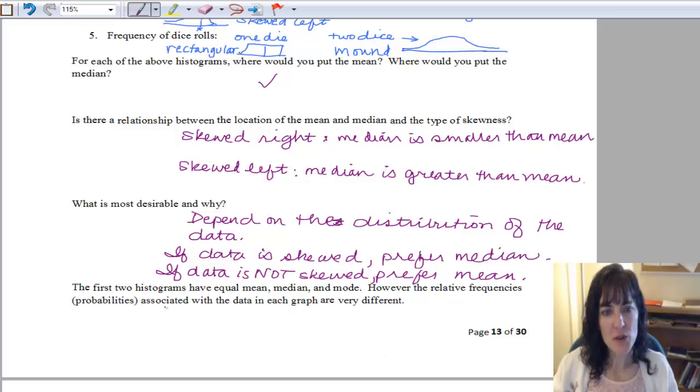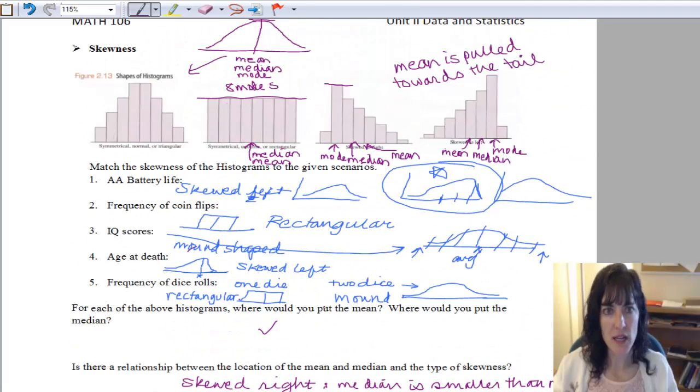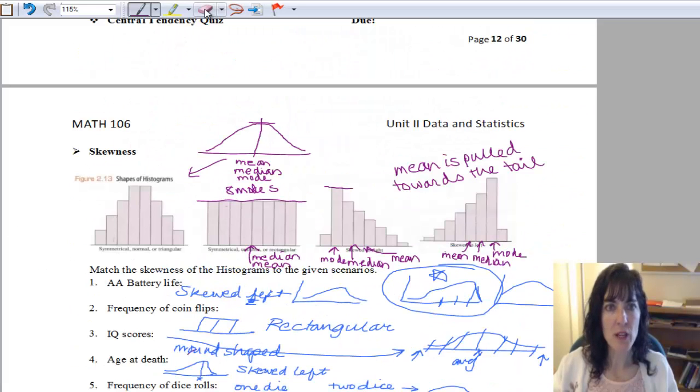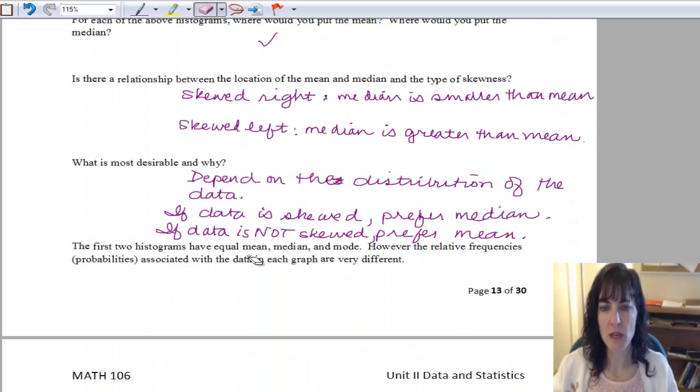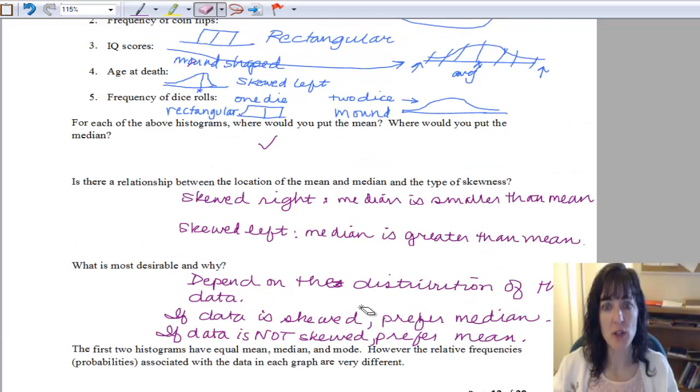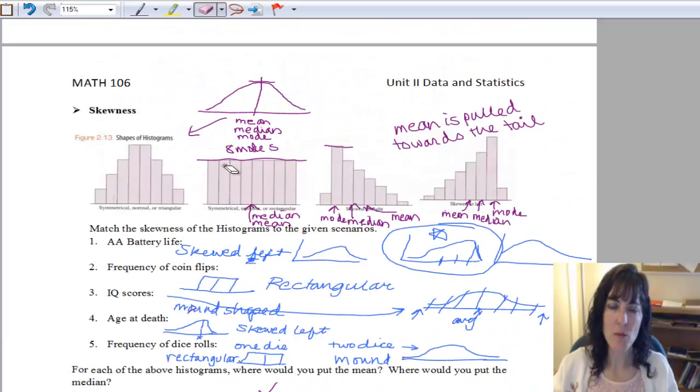Okay, so the first two histograms have the mean, the median, and the mode all in the exact same place. So let's look back at them, and we can see definitely our mean, median, and mode were all three in the middle, and we wrote it up here. And then for the rectangular, the mean, median, and mode were all three in the middle. Okay, so those all have the same equal mean, median, and mode. And we're saying that the relative frequencies or the probabilities associated in the data for each graph is very different. So here you have the same frequency for each of the bars, but here we don't.